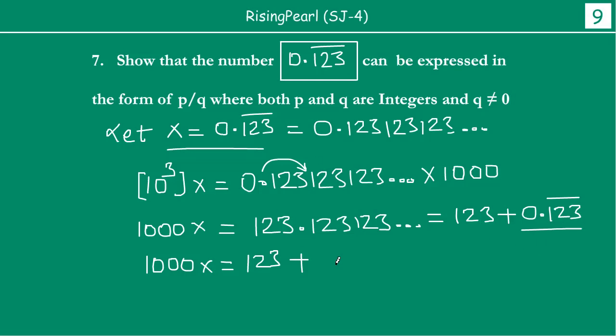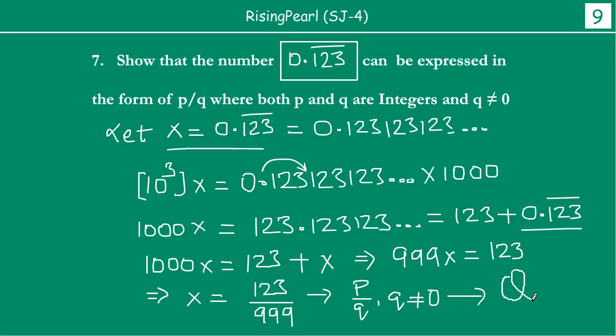So we see 1000x is equal to 1, 2, 3 plus, this is nothing but x. So you got your x here. So we can tell, so this implies, if you bring x to this side. So now 999x is actually equal to 1, 2, 3. So that implies x is actually equal to 1, 2, 3 divided by 999. So this clearly is of the form P by Q, where P is 1, 2, 3, Q is 999 and Q is not equal to 0 and that is why this is a rational number.